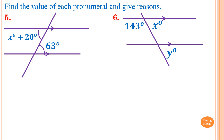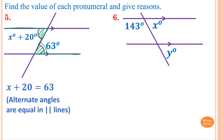Question five: this angle and this angle are alternate — like the letter Z, there you go. Alternate angles are equal, so X plus 20 equals 63. The reason is: alternate angles are equal in parallel lines. To solve for X, minus 20 from both sides — 63 minus 20 is 43 — therefore X equals 43.